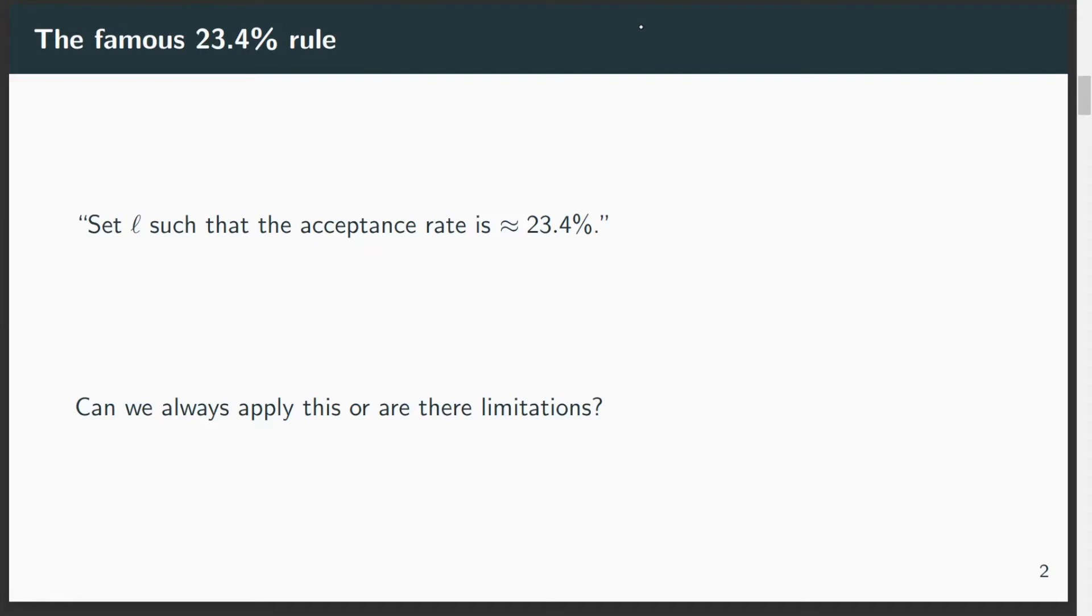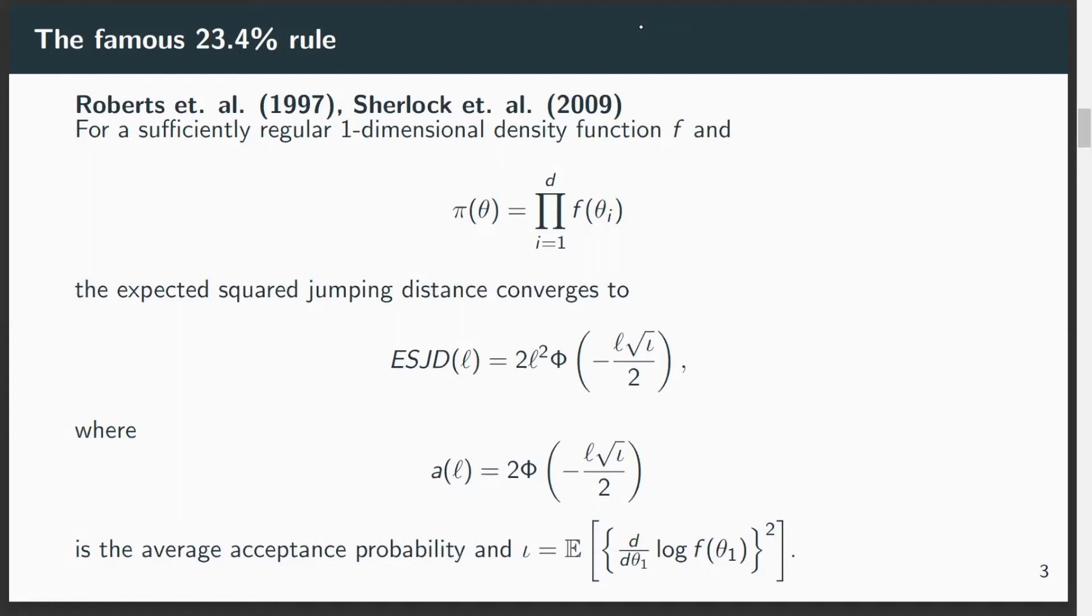Should we always use this rule like this? Are there any limitations or deviations from this? This is what we want to investigate in this paper under a Bayesian framework. And to do that, we want to go into the details of the original theory that started to be developed in the 1990s.